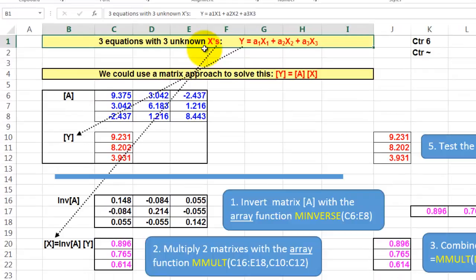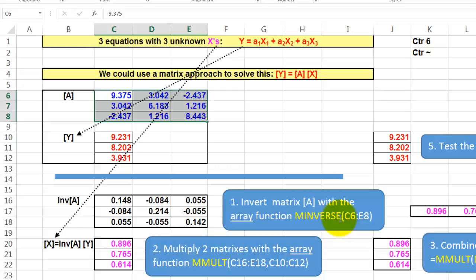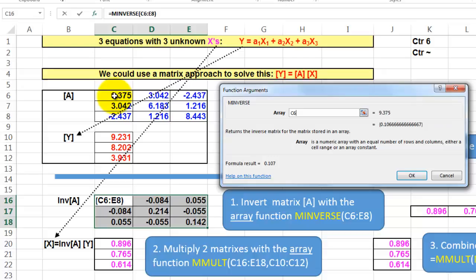First, we are going to invert matrix A with the array function MINVERSE. It's an array function, that means you get multiple answers. So we select all the cells that are going to hold the answers. We call the matrix inverse function for the range C6 through E8. Don't click on OK, but do Ctrl-Shift-Enter.